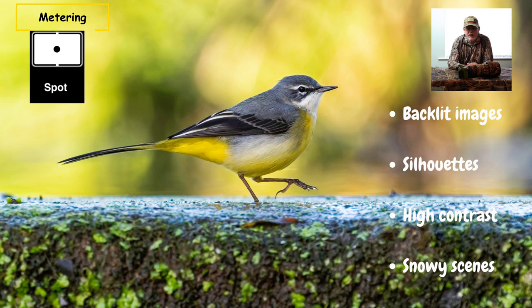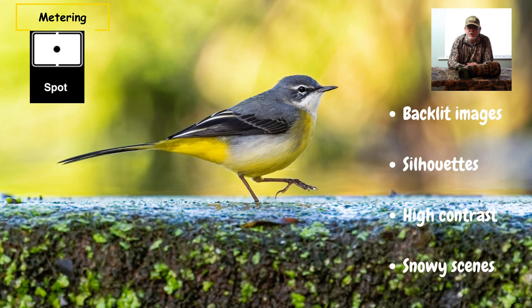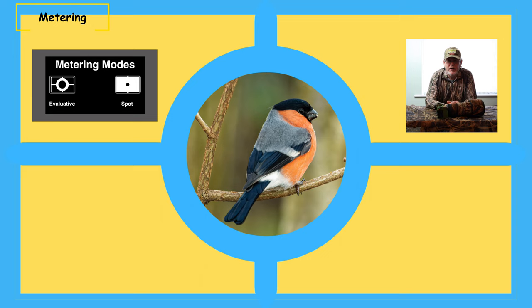The other one is spot metering, whereby the camera meter is looking at a specific spot on the subject within your frame and ignores everything else — it's just measuring light off that one part of your image. That's mainly used on backlit images, silhouettes, high contrast situations, and things like snowy landscapes or snowy scenes. So what would I recommend? Use evaluative or matrix metering, set your camera up for that, get to know it, understand it — and once you've done that, then think about considering spot metering, but only after you're happy with evaluative metering.